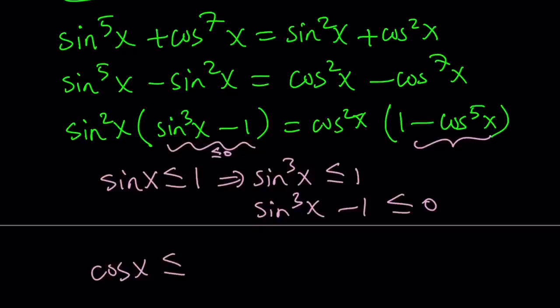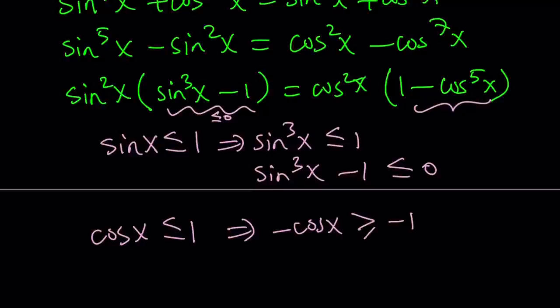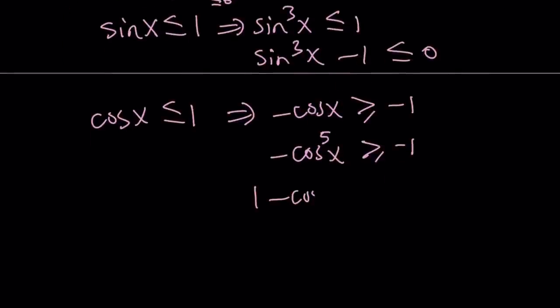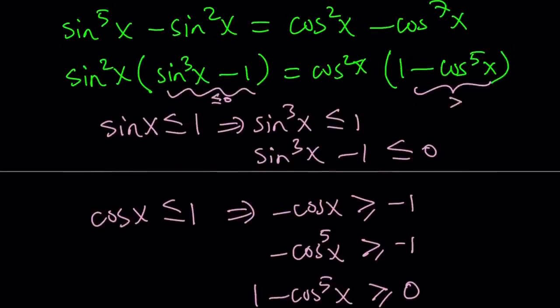Here's what we're going to look at. Cosine x is less than or equal to one. If you multiply both sides by negative one, negative cosine x is greater than or equal to negative one. It's always greater than or equal to negative one. And then we can raise both sides to the fifth power. And then if we add one to both sides, one minus cosine x to the fifth is greater than or equal to zero. So this is the other thing we got.